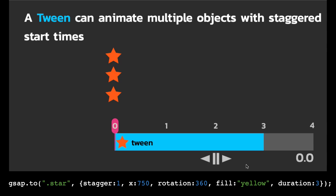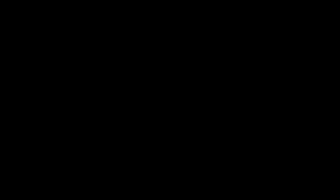Next, I want to talk about my favorite thing about GSAP, and that is timelines. A timeline is a container for multiple tweens. Here I have a timeline that contains a tween for the star, the yellow circle, and the purple square. I can play that timeline, and as the timeline's playhead progresses, you'll see that it triggers the updating of each tween inside of it. So these are referred to as child tweens of the timeline.